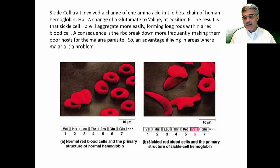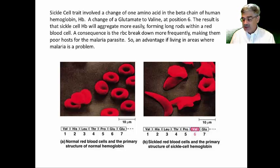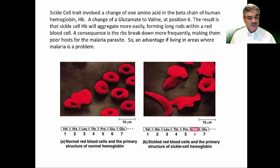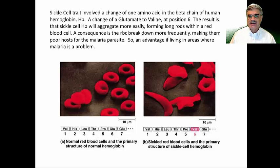Normal red blood cells have to be replaced every three or four months, but in sickle cell anemia, due to the elongated shape, they have more wear and tear and must be replaced in less than a month. The consequence is that people with the condition are anemic because they constantly have to replace red blood cells. But the advantage is that where malaria is prevalent, the malaria parasite — which lives within red blood cells — cannot reproduce because the lifespan of sickle cell red blood cells is so short.